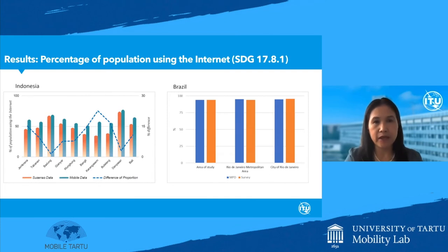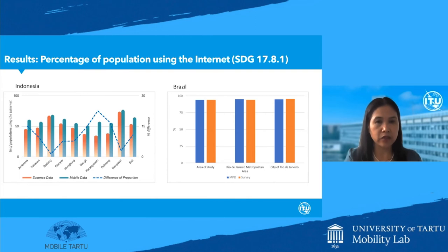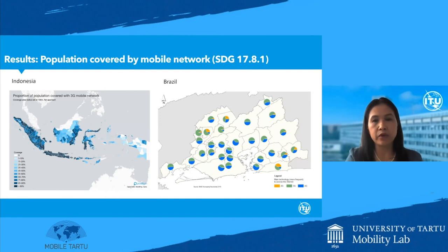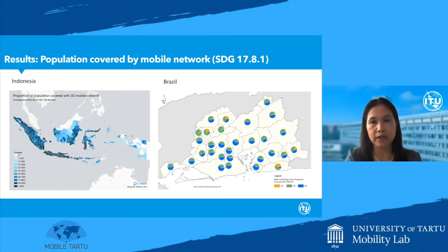Results from Indonesia and Brazil show that data on the percentage of population covered by mobile signal can be provided at a more disaggregated level, comparing data provided by the regulator with that from mobile phone big data. For the percentage of population using the internet — a key SDG indicator — in Brazil the MPD has a very small difference from survey data, while in Indonesia although there are some differences, the pattern is similar. One can conclude that mobile phone big data could complement or supplement data coming from household surveys, providing more disaggregated data including breakdown by technology type and sub-municipal levels.